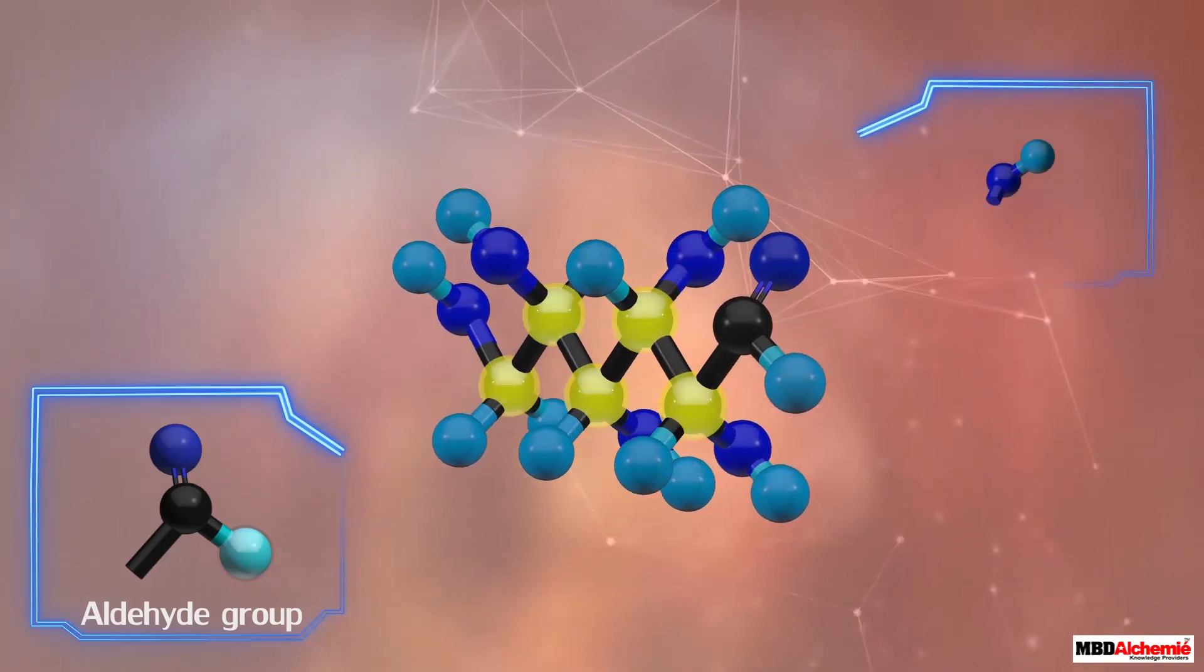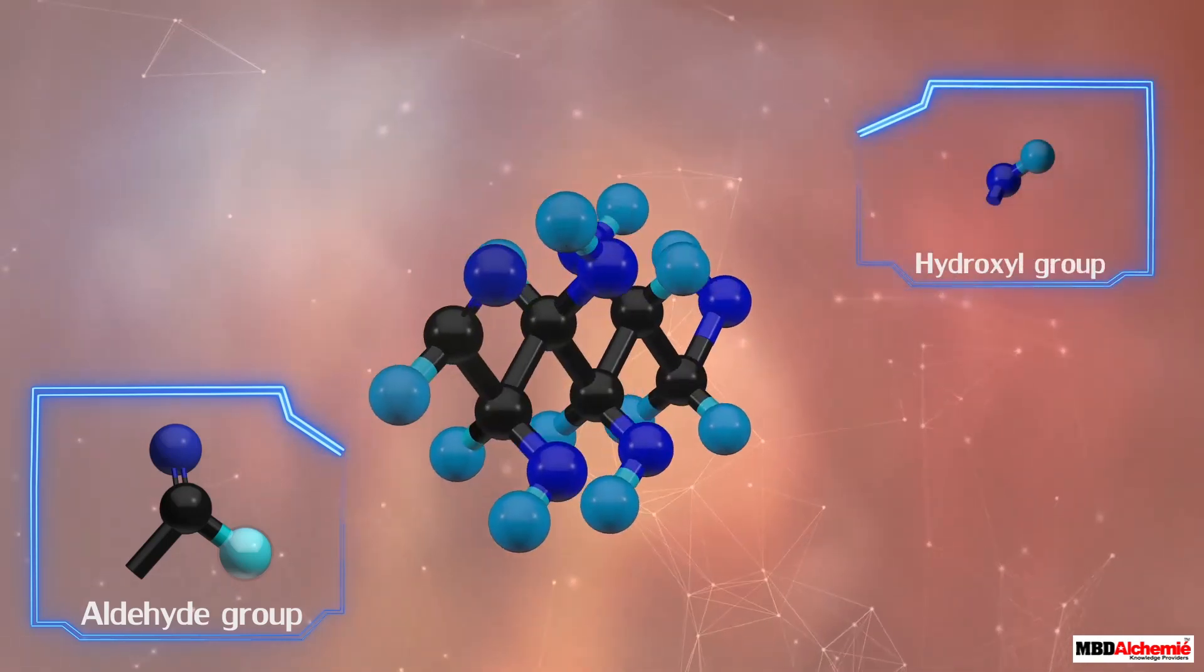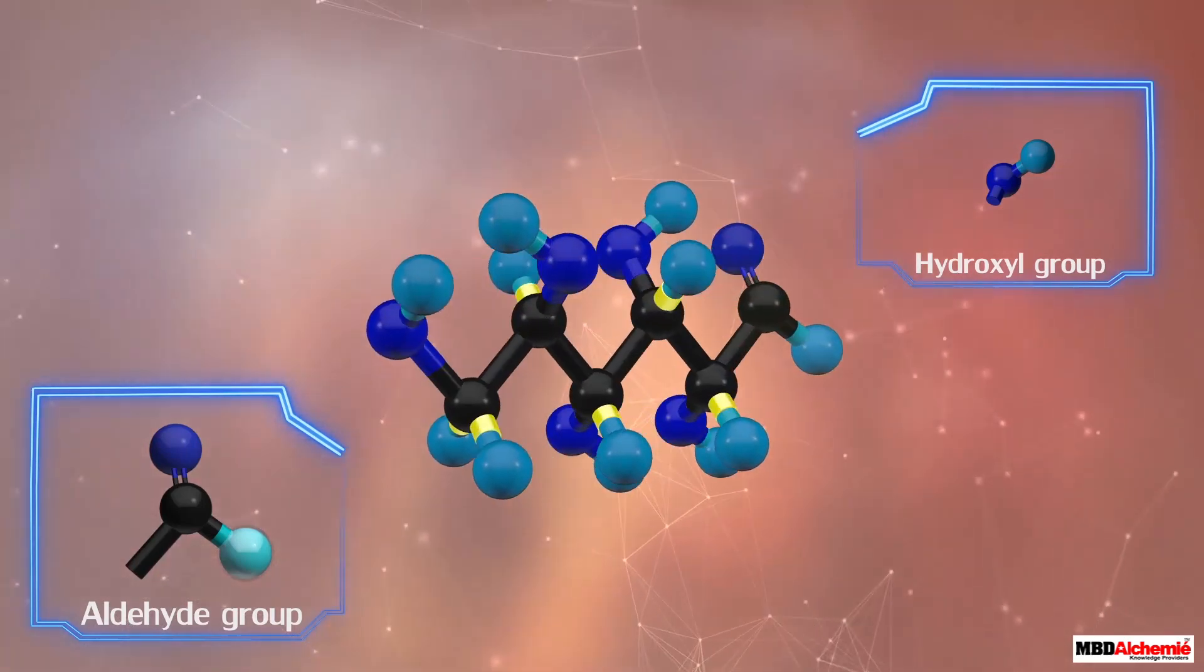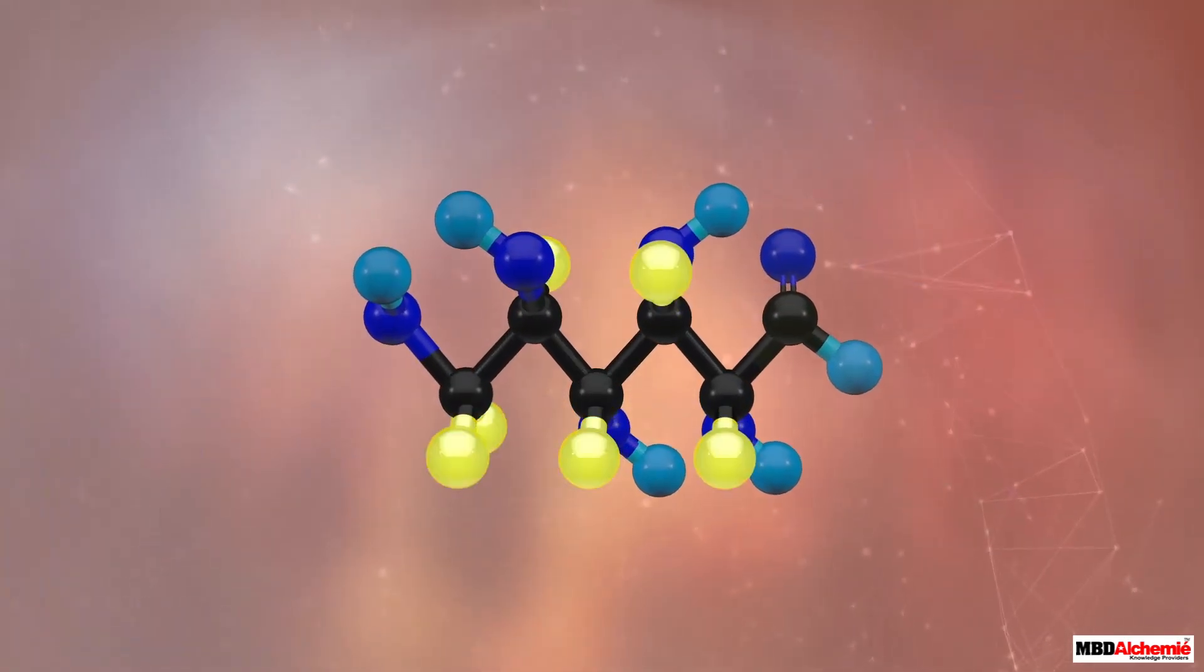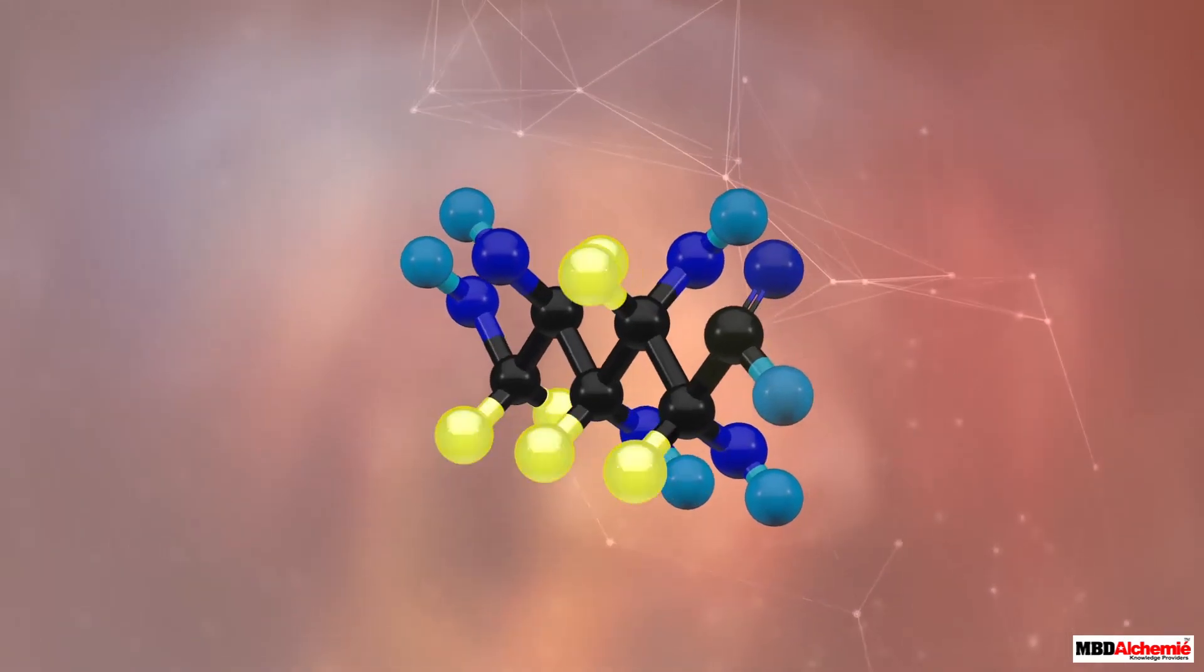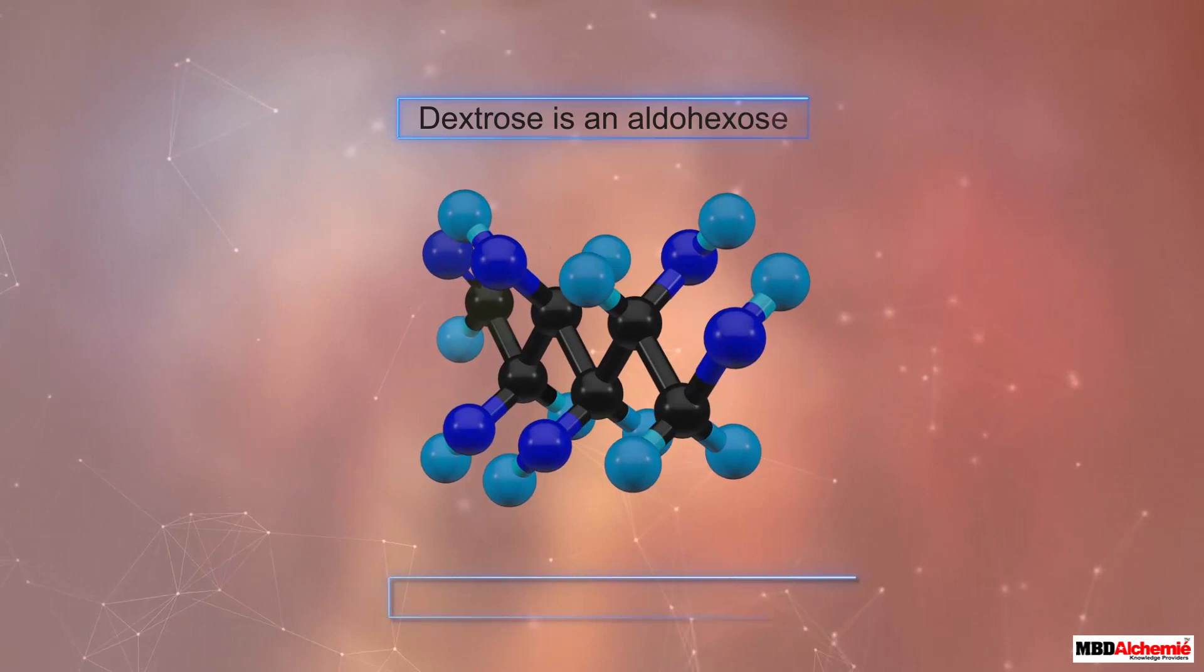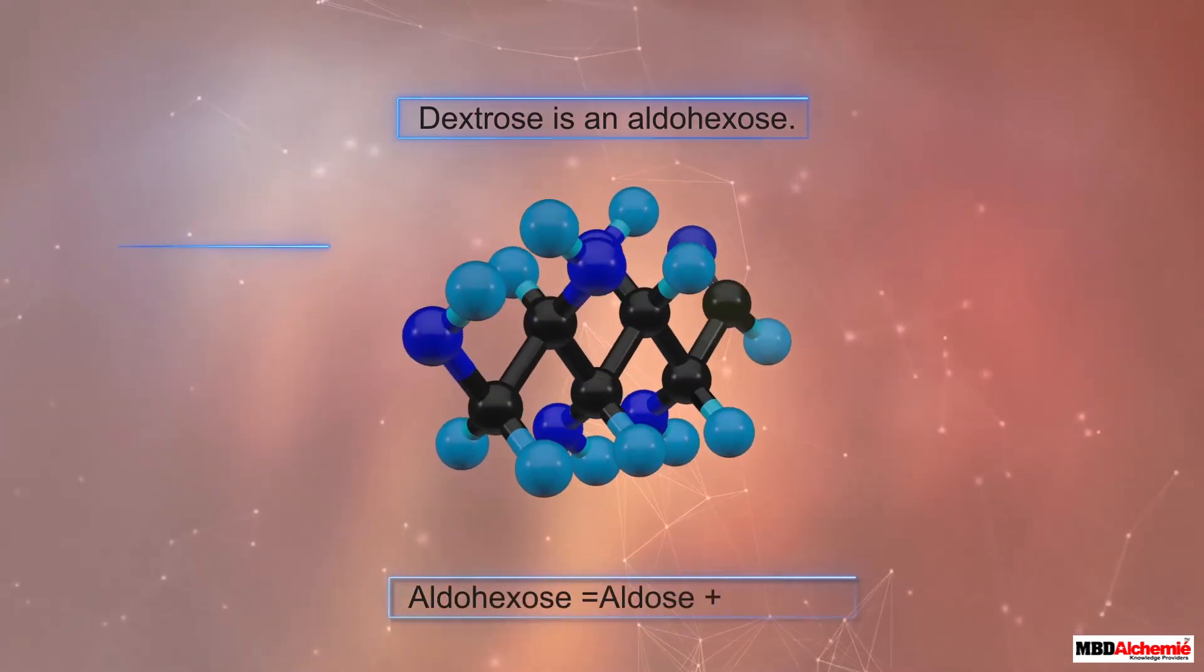Each of the other five carbon atoms of the chain has one hydroxyl group. The remaining valencies of the carbon atoms are satisfied with hydrogen atoms.